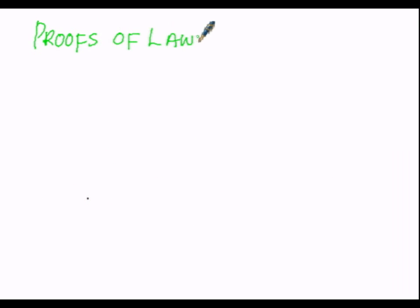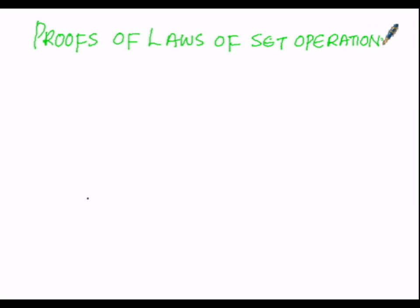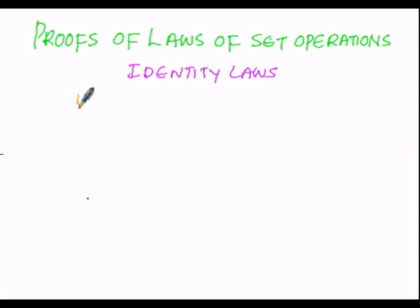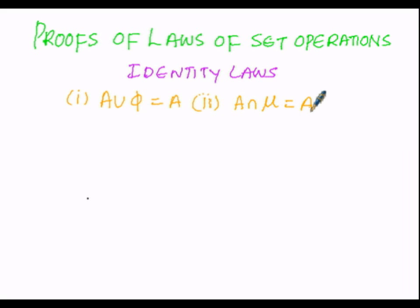Proofs of laws of set operations. Here we are going to prove the laws of set operations, specifically the identity laws. The first identity law is A union φ equals A, and the second one is A intersection μ equals A. We are going to prove these two conditions at an advanced level.